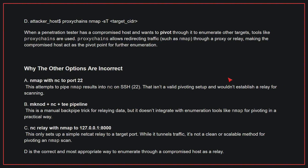Why the other options are incorrect: A — this attempts to pipe Nmap results into Netcat on SSH; that isn't a valid pivoting setup and wouldn't establish a relay for scanning. B — this is a manual backpipe trick for relaying data, but it doesn't integrate with enumeration tools like Nmap for pivoting in a practical way. C — this only sets up a simple Netcat relay to a target port; while it tunnels traffic, it is not a clean or scalable method for pivoting an Nmap scan.